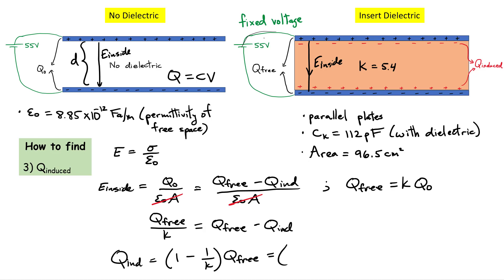Substituting the values: Q_induced = (1 − 1/5.4) × 6.16 nanocoulombs. Carrying out the multiplication gives approximately 5.02 nanocoulombs. That's the induced surface charge at the surface of the dielectric.